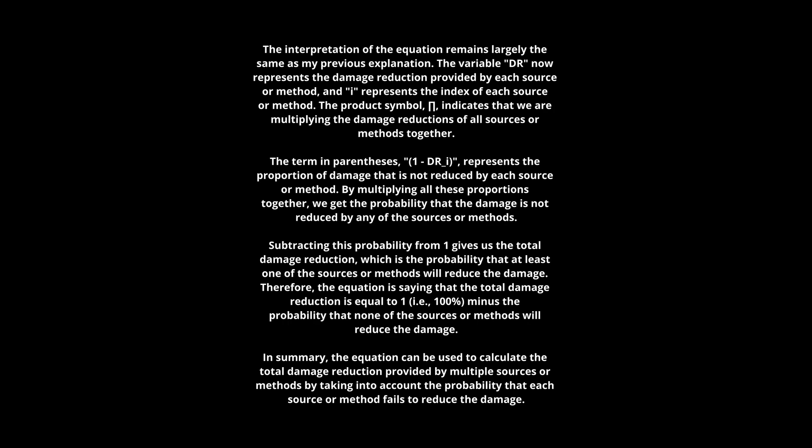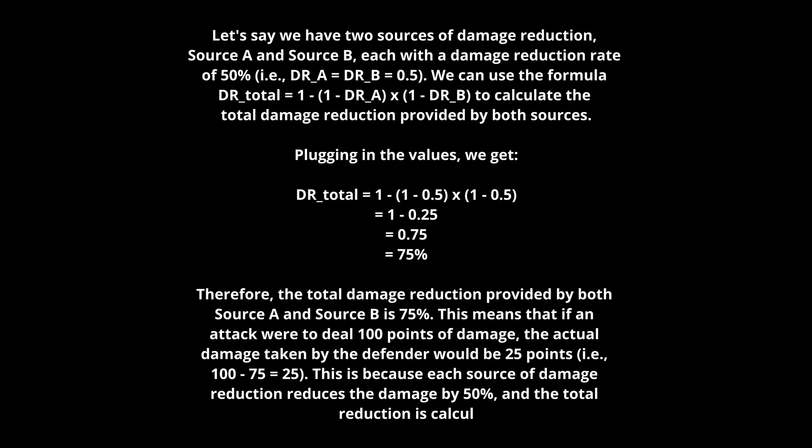Again, DR means the damage reduction, and i represents the index of each source. The product symbol, the big pi, indicates that we are multiplying the damage reductions of all the sources rather than adding them. If we have a sigma symbol, it means we are adding them—here they are actually multiplying. So basically we're multiplying each source of damage reduction we have.